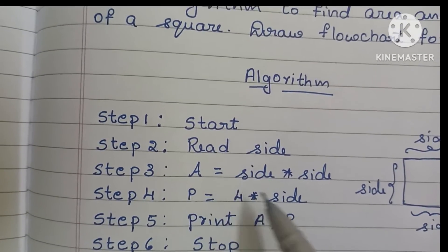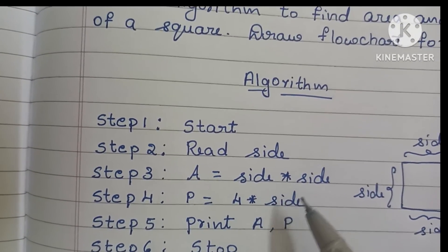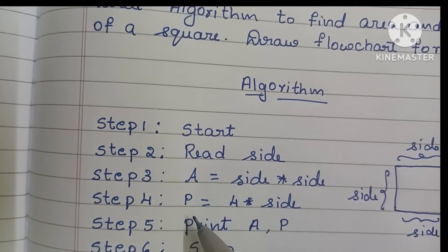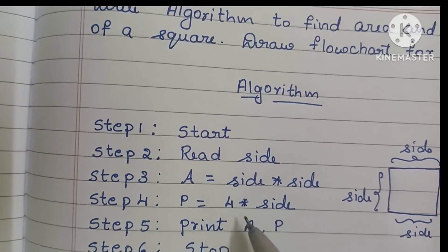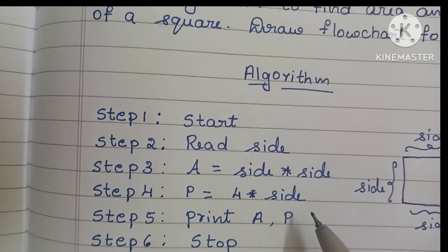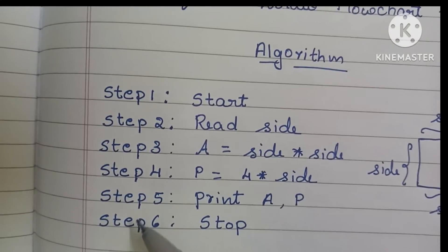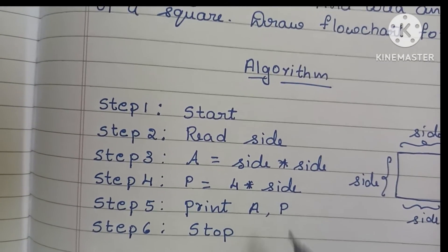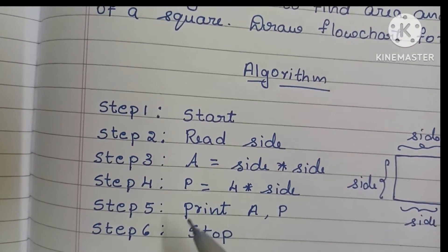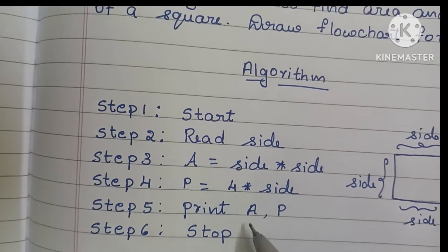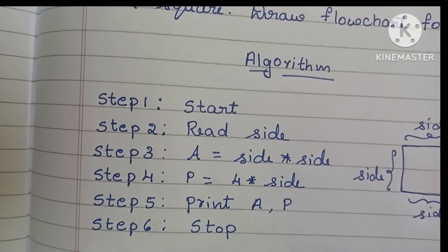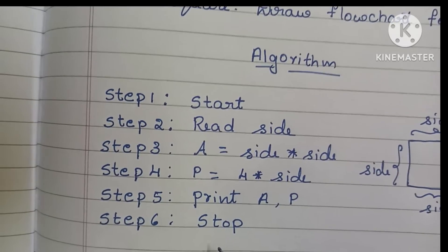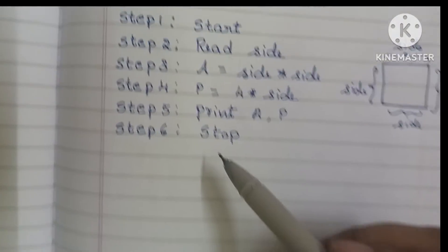In step three we have to find the area of a square — that is A = side × side. In step four we have to find the perimeter of a square — that is four × side. In step five we print A, P. In step six we stop the algorithm using the stop statement.